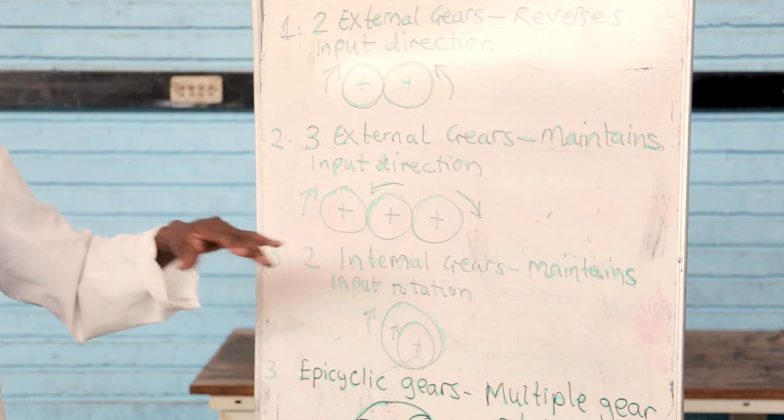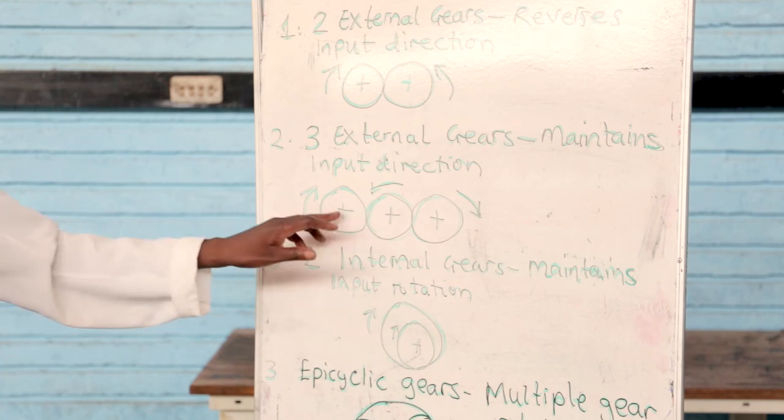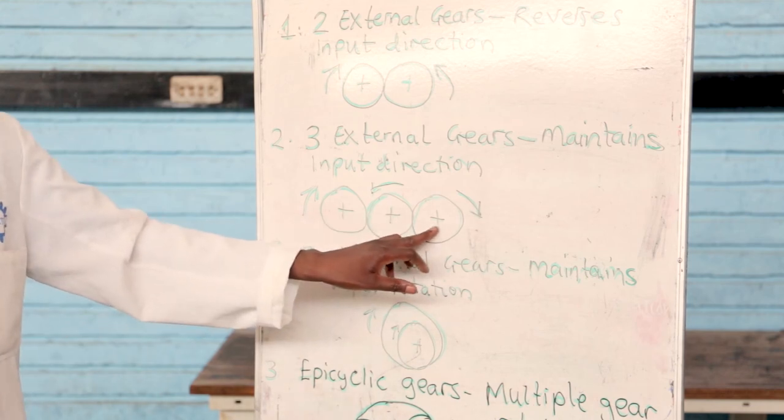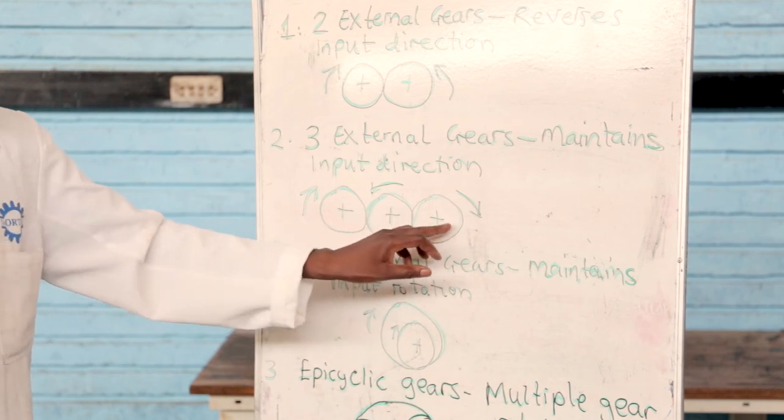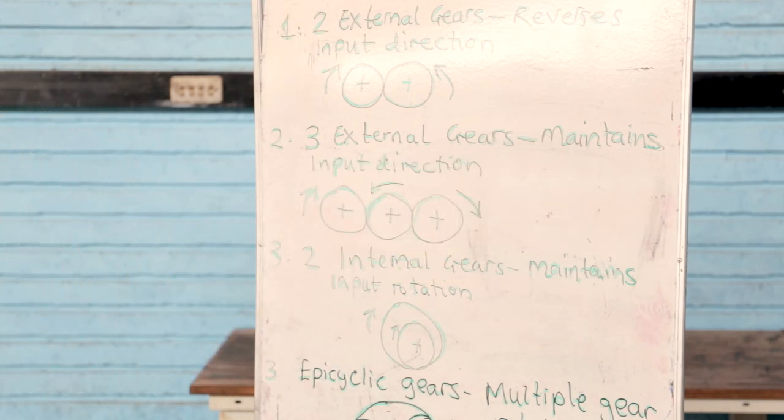In this case, the vehicle is going in the forward direction. This is the design that is put in almost all the gearboxes. Now, if you want to do a reverse, you put another gear which is called an idler and it will reverse and the vehicle runs in reverse.